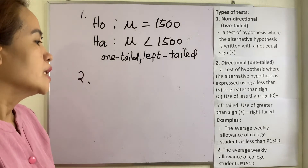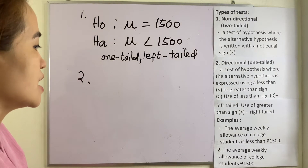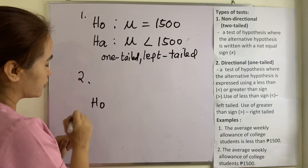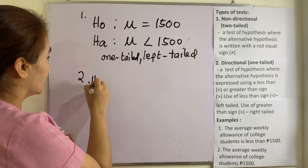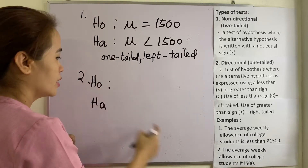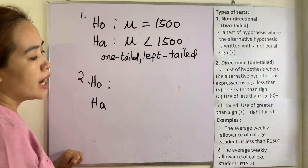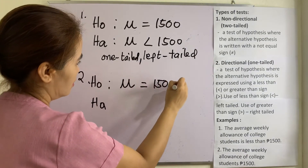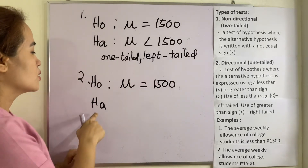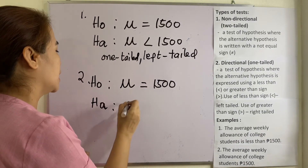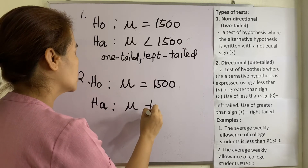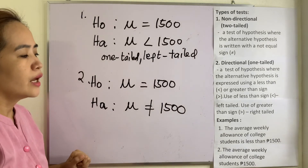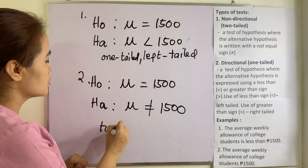Number two: the average weekly allowance of college students is 1,500. The null hypothesis is equal to 1,500. Since it is a null hypothesis, the alternative hypothesis would be not equal to 1,500, which is the opposite of the null hypothesis. Therefore, this one is two-tailed.